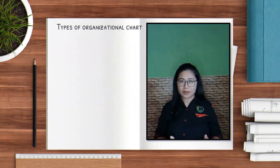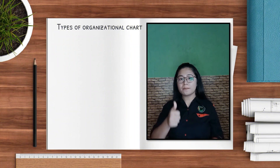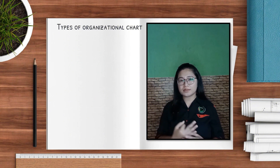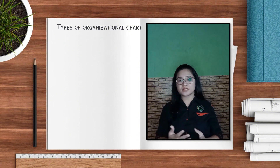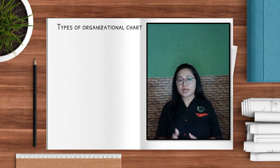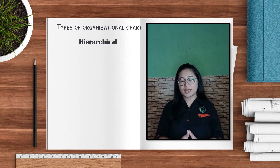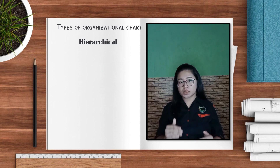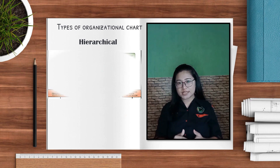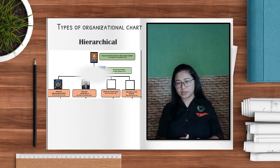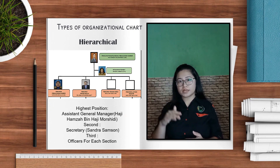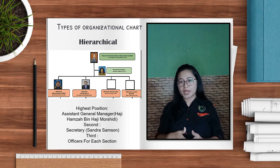Hierarchical, matrix, and flat are three types of organisational chart. Perancangan Sumber uses the hierarchical type in constructing their chart, because the highest position — the Assistant General Manager — is at the top of the organisation and the lower positions are beneath them.